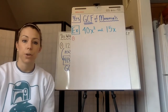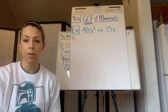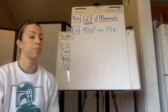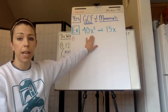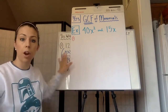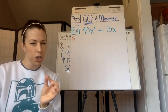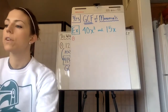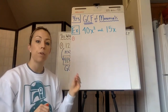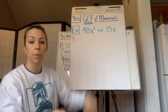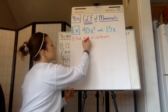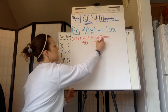Now for today's notes. We're going to be finding the greatest common factor of monomials. A monomial is the algebraic way of saying single term or one term. In our example, we're looking at 40x squared and 15x. The only difference from our warmup is that we now have variables, which changes things slightly. Step one: find the greatest common factor of the coefficients — the numbers in front of the variable. So what is the GCF of 40 and 15?